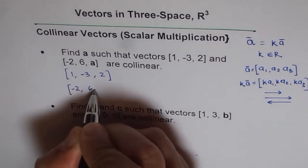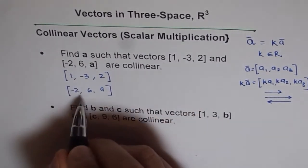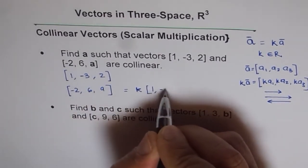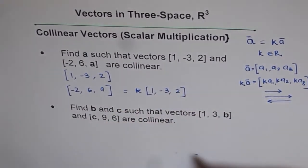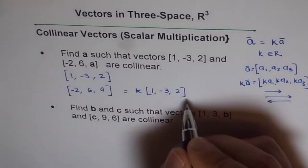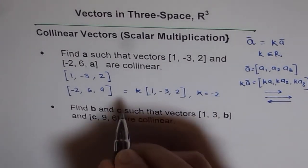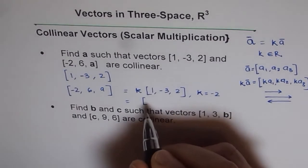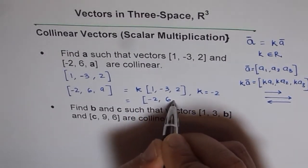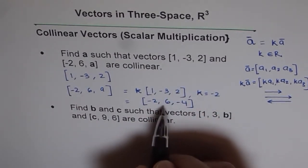Since the two vectors are given as collinear, the second vector should be k times the first vector [1, -3, 2], where k is any real number. k times 1 equals -2, so k equals -2. Multiplying the first vector by -2 gives us: -2, (-2 times -3) = 6, and (-2 times 2) = -4. So the scaled vector is [-2, 6, -4], which is collinear to the given vector.